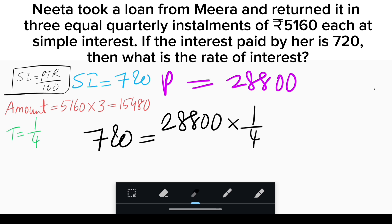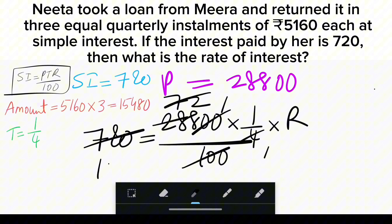The 100 and double zeros are cancelled, so R = 10%. That's it, guys.